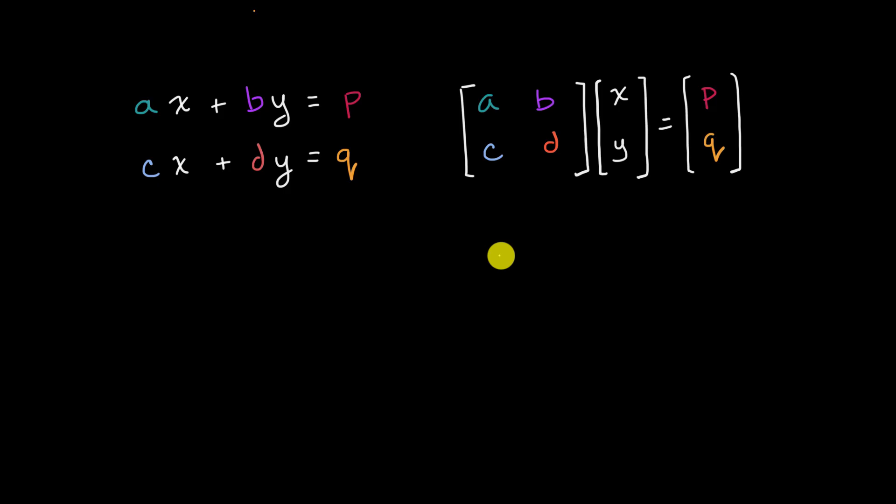And in other videos, we also talked about this idea of inverses. So for example, if we call this right over here, matrix A, you can imagine that, or what we're seeing here is matrix A times the vector x, y, I'll just write it like that, is equal to the vector p, q.